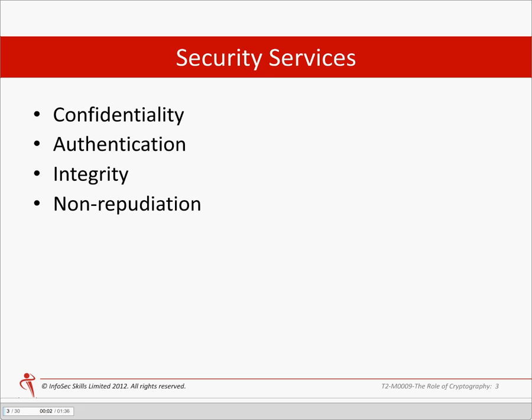The security services that cryptography can assist in providing are as follows. Confidentiality is the protection of information such that only the originator and intended recipients can see the information. In essence, this means data is being encrypted. This could be data when travelling around a network, such as an email in transit, or when encryption is used to protect information at rest on a disk. Only authorized users will be able to decrypt the messages or files.